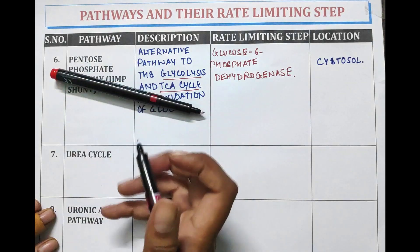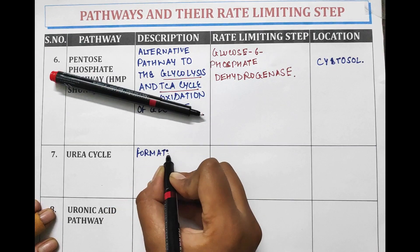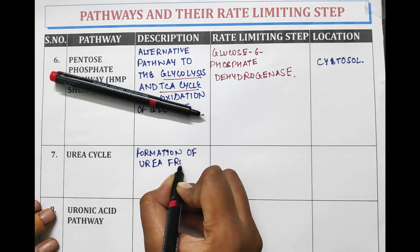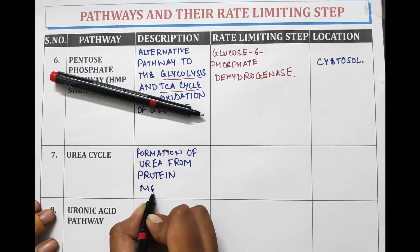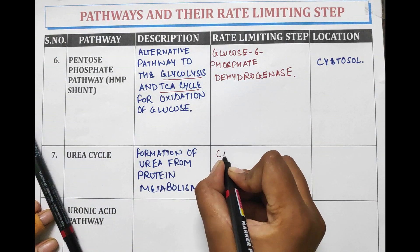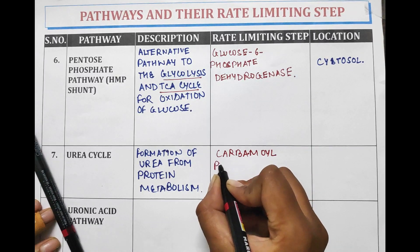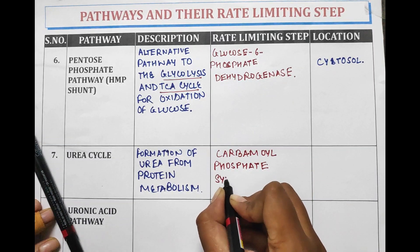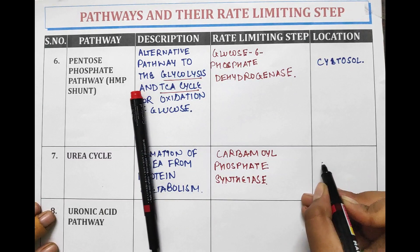Urea cycle: it is the formation of urea from protein metabolism. The rate limiting step in the urea cycle is carbamoyl phosphate synthetase, and the location of the urea cycle is the liver.